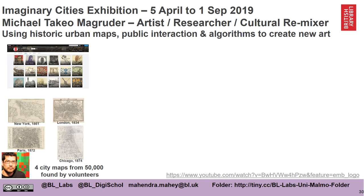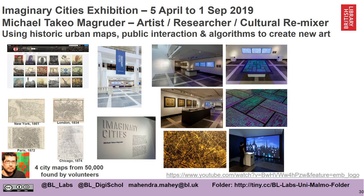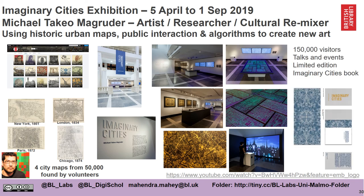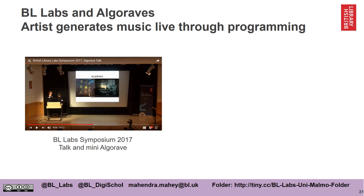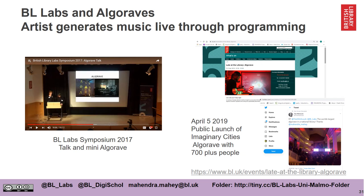In 2019 I worked with an artist called Michael Takura Magruder, creating artworks based on four digitized maps found in these books — one each of New York, London, Paris and Chicago. Michael created two physical works and two digital books based on these maps. We had a very successful exhibition with over 150,000 visitors, lots of talks and events, and we even created a limited edition book. We've also worked with DJs and algo-ravers to take our data and perform it through programming — something called an algo rave. At the launch of the Imaginary Cities exhibition in 2019, we had an algo rave where artists took our data and performed it.